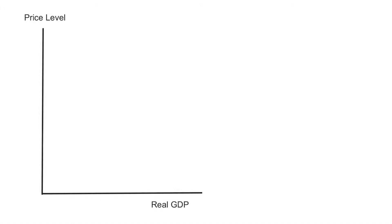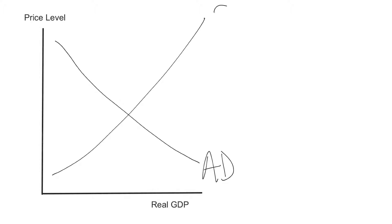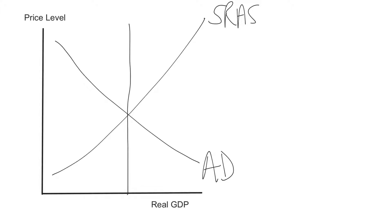Now we're ready to put all our curves together. First, I'll show a long-run equilibrium. You have your aggregate demand and your short-run aggregate supply. Wherever those two intersect is the equilibrium — it is where you are right now in the economy. To be a long-run equilibrium, you need the intersection of aggregate demand and short-run aggregate supply to occur on top of the long-run aggregate supply curve.